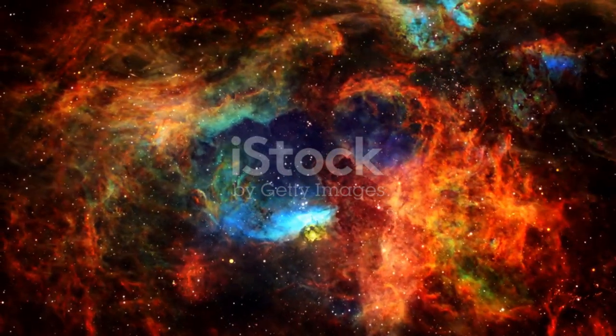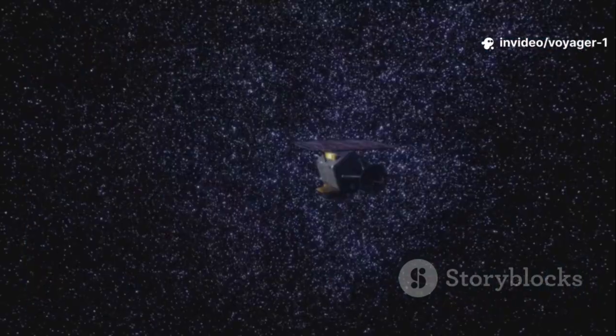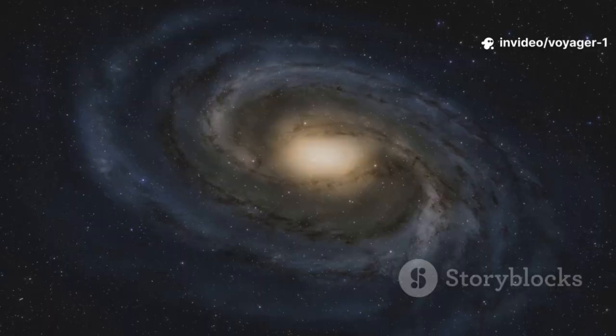The reality, Voyager 1 reported, was far stranger and more wonderful than our old map suggested. First, as we've seen, the boundary itself was not a clean line. It was a chaotic, frothy zone of turbulence and magnetic bubbles.